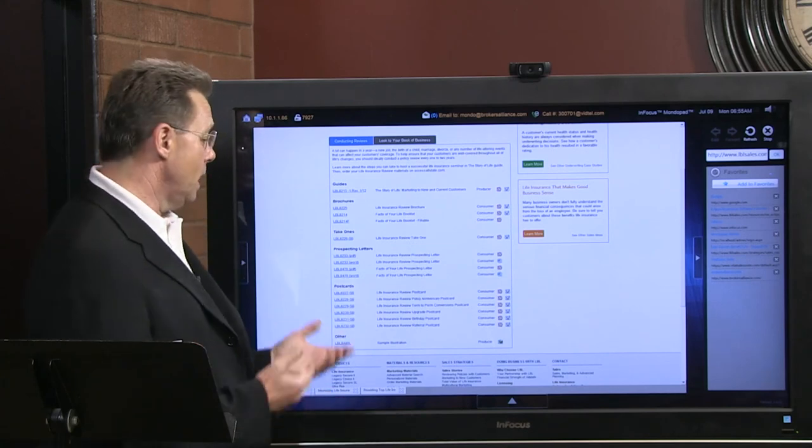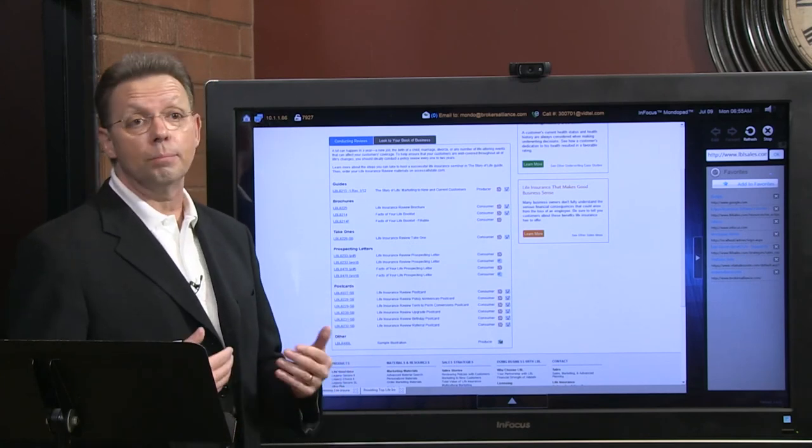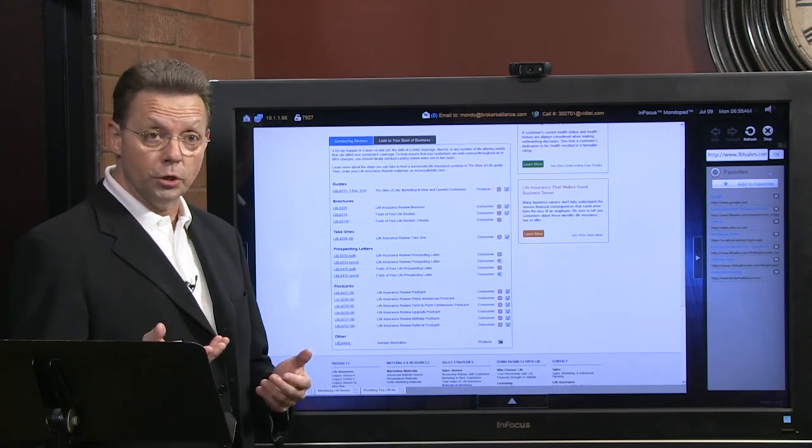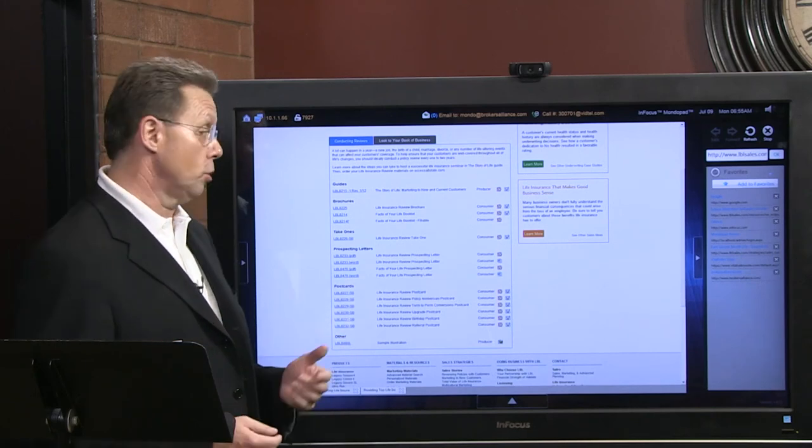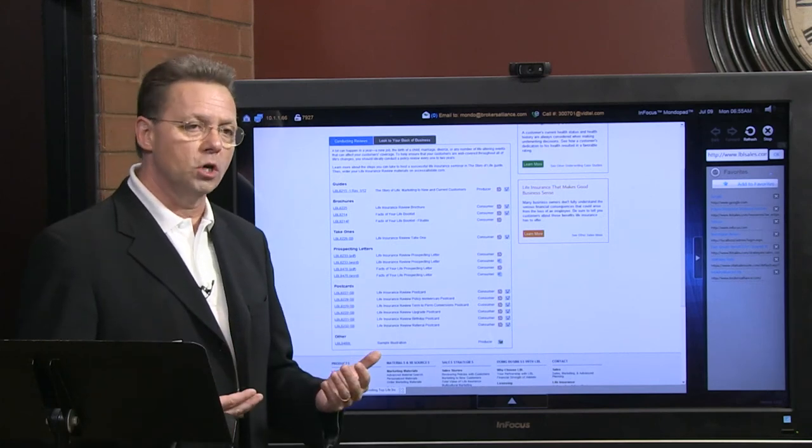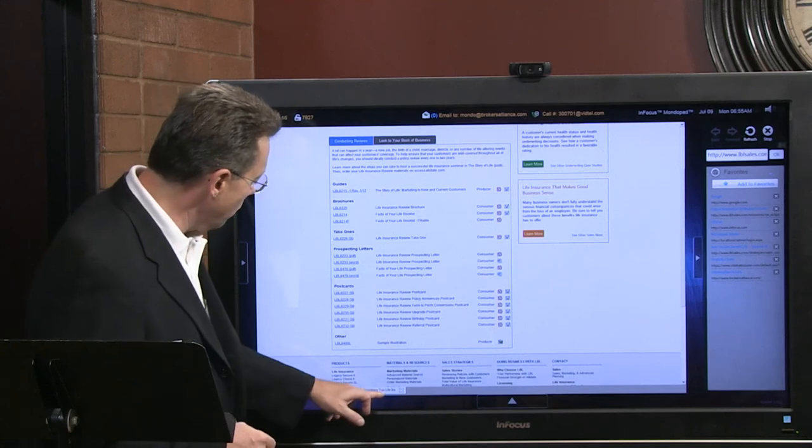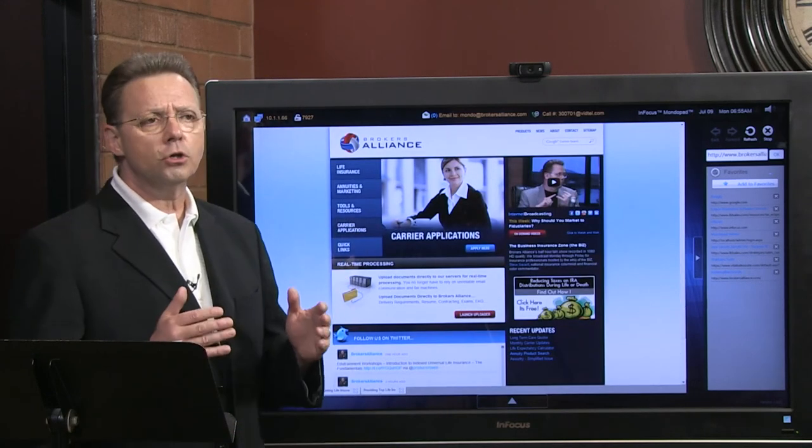You'll also notice prospecting letters and postcards. These are excellent tools if you say, 'Boy, I don't know how to develop a marketing campaign.' This is a very good beginning. Remember, even though it's already been through compliance with Allstate, if you're with a broker-dealer you're going to have to have your broker-dealer approve the language here. If you're with an insurance agency that has the same protocols, you'll need to get their compliance to approve it as well.